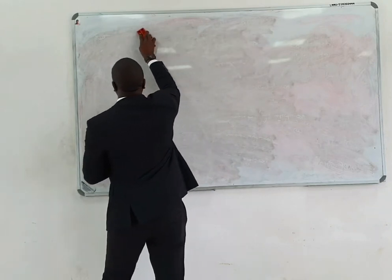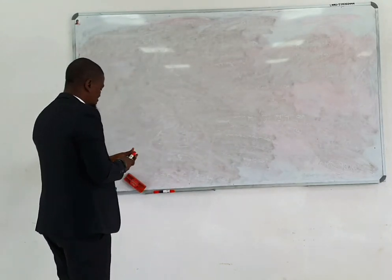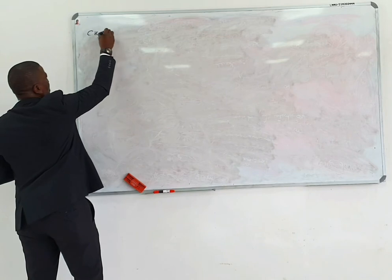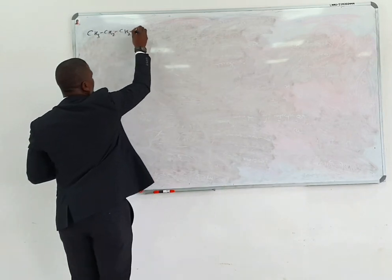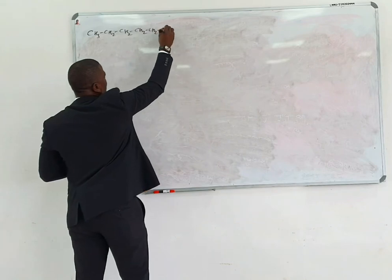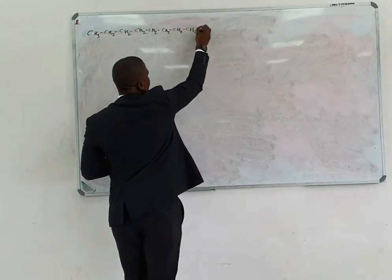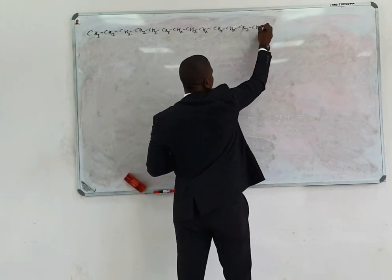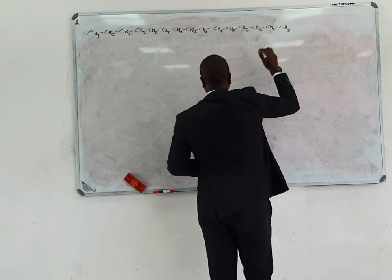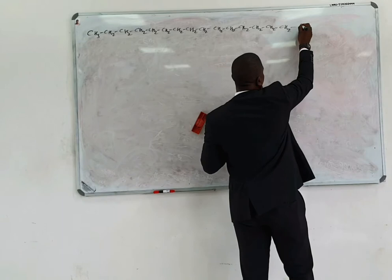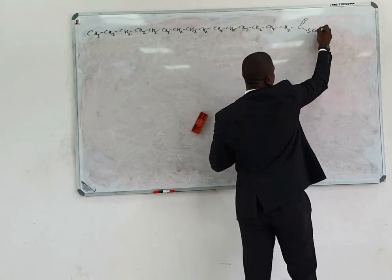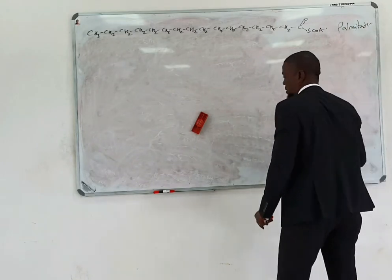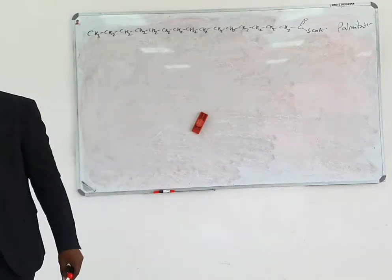So let's draw the fatty acid — the whole length of the fatty acid. CH3, then CH2 carbons numbered 1 through 16. That is your fatty acid with 16 carbons.